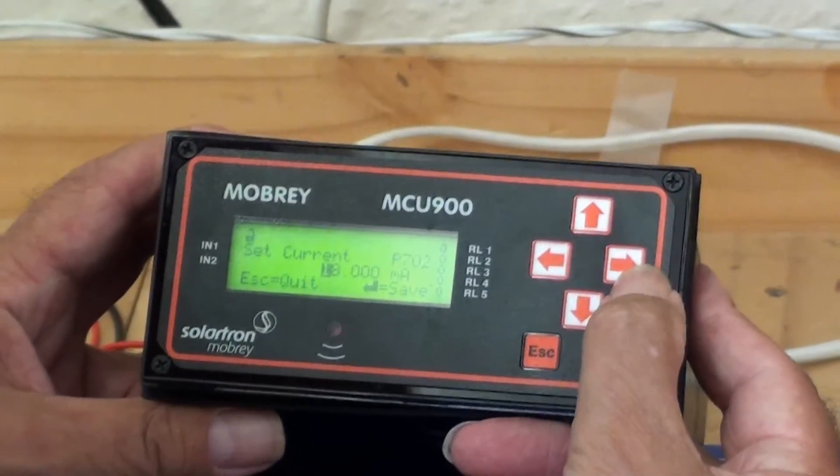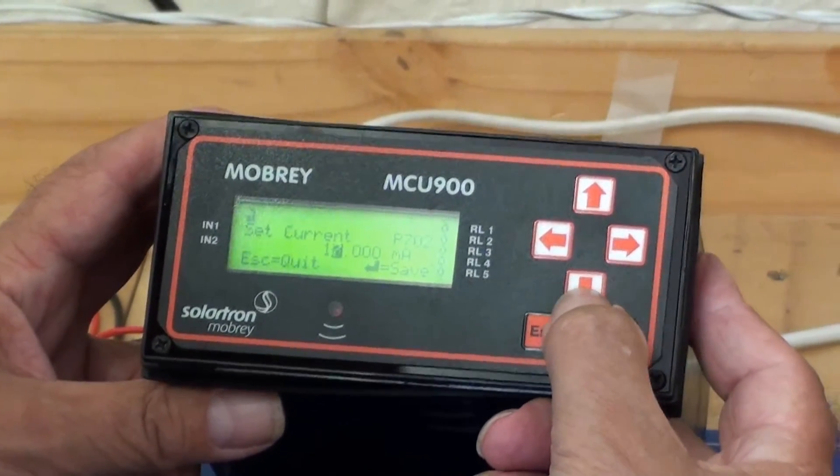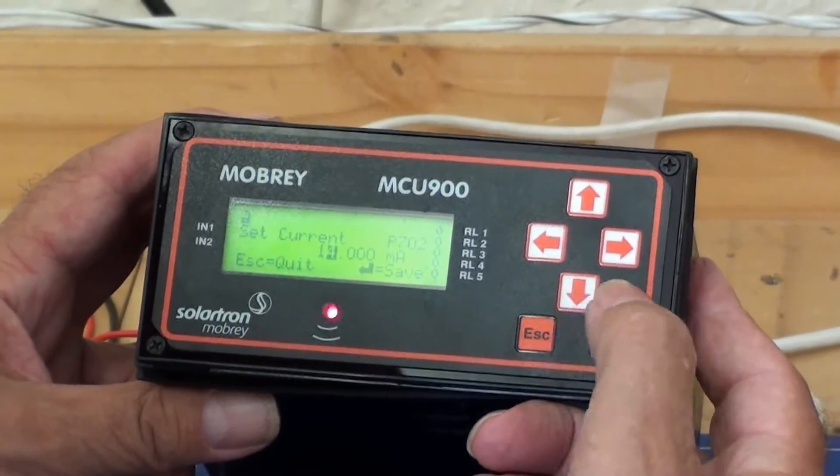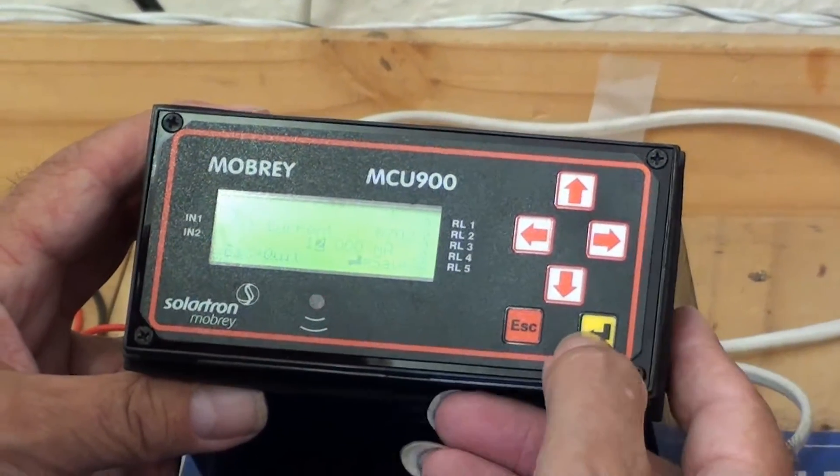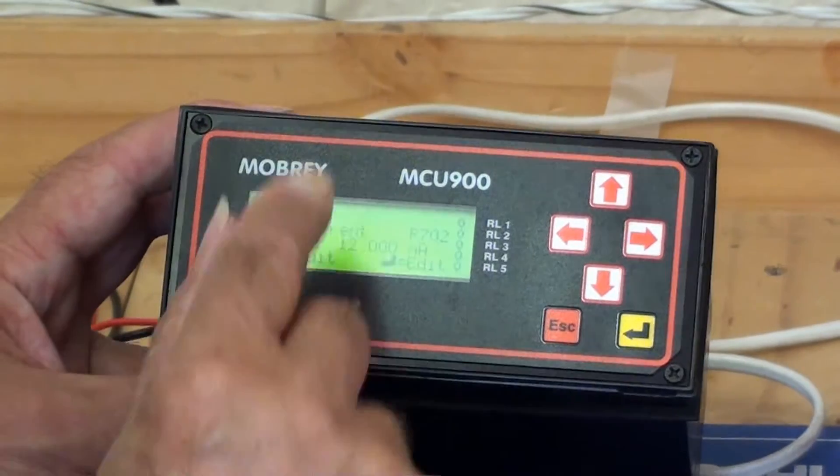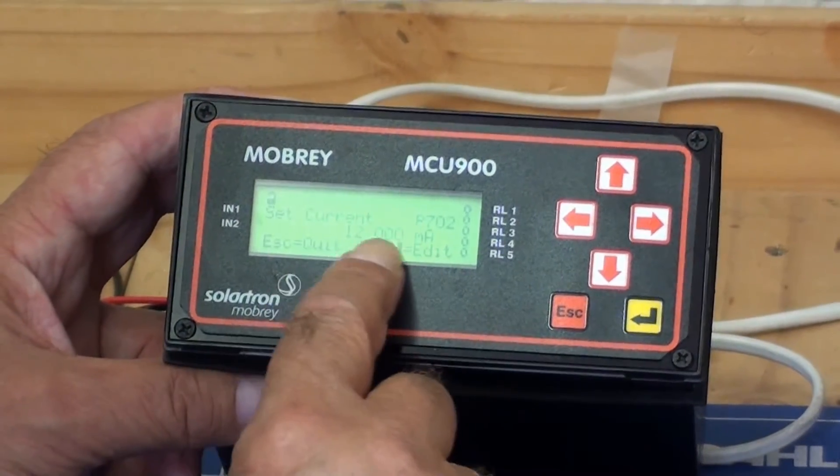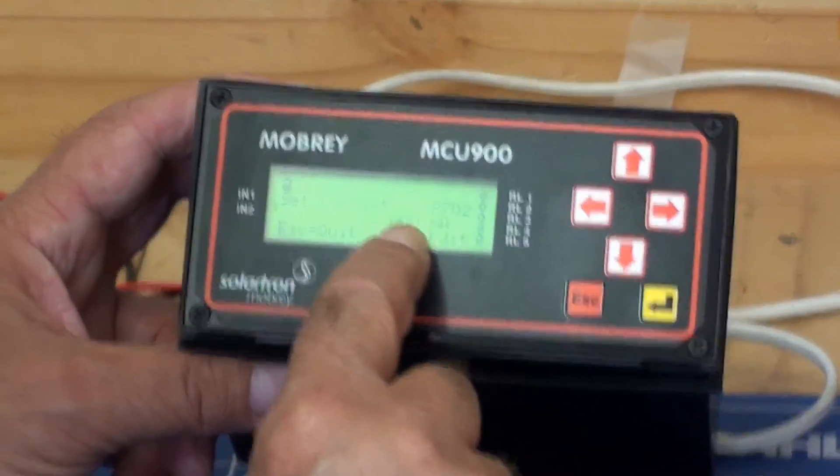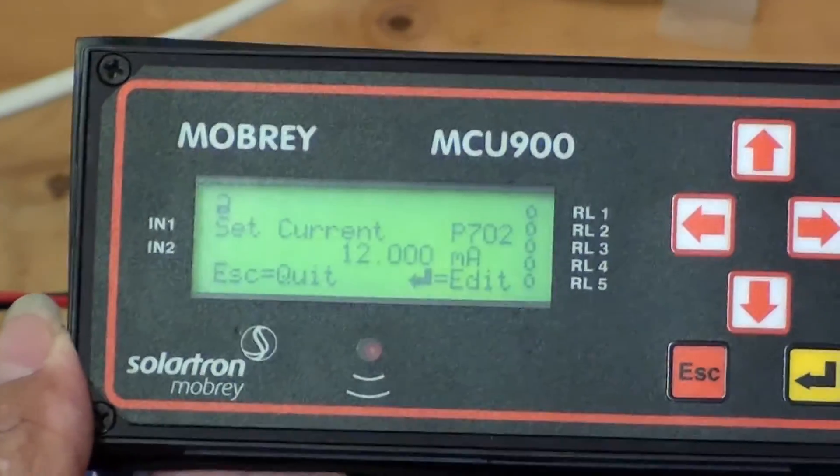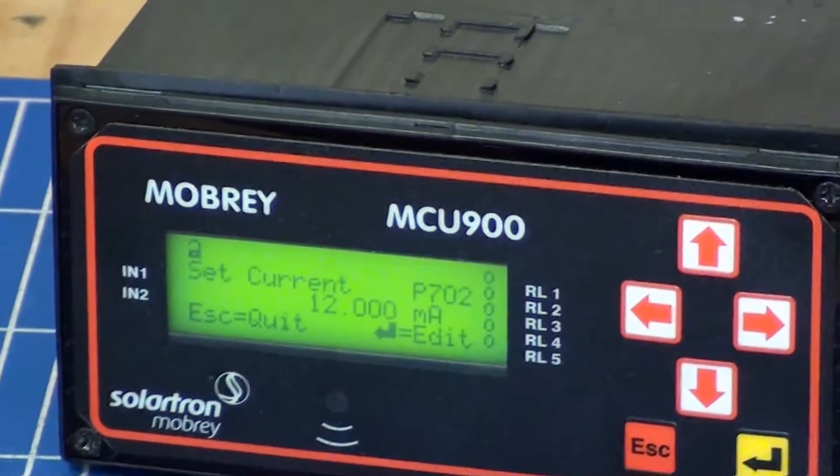Let's change that, let's edit it. Let's put in 12mA, okay. The display here, 12mA, so I'm outputting 12mA from the control box into the SEM1200.